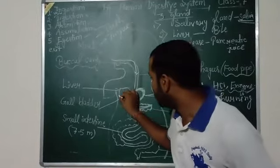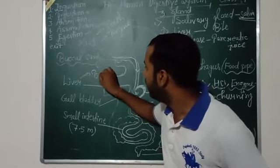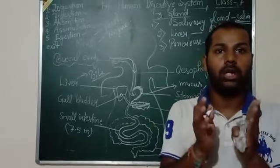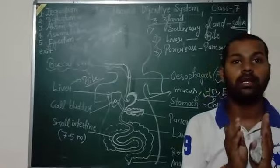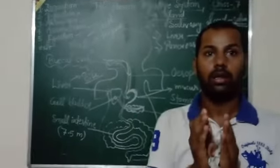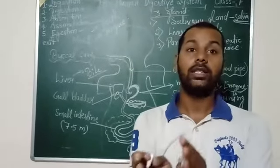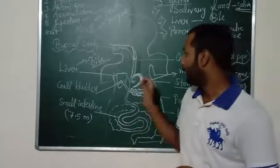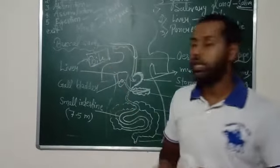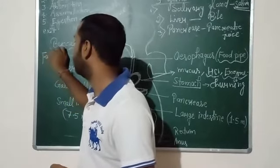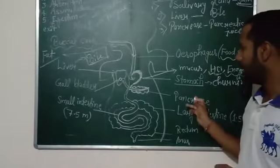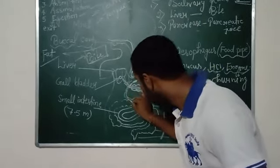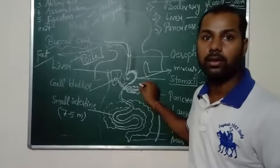Next is the liver. The liver is present on the right side and secretes bile. The liver is the largest gland of the body — an important question: which is the largest gland in humans? That is the liver. Bile is temporarily stored in the gallbladder. The function of bile is to digest fat. The pancreas secretes pancreatic juice. Both bile and pancreatic juice mix in the small intestine and release enzymes there.